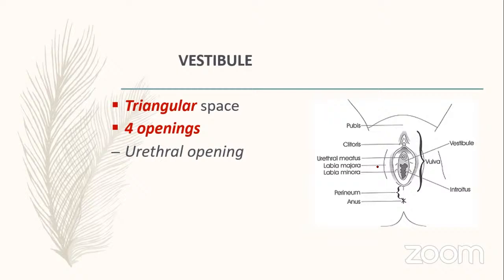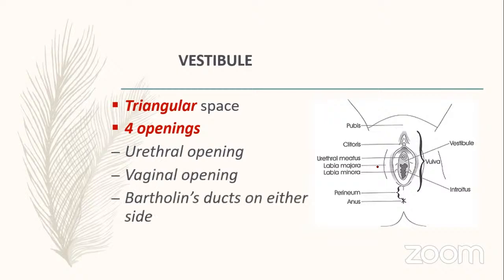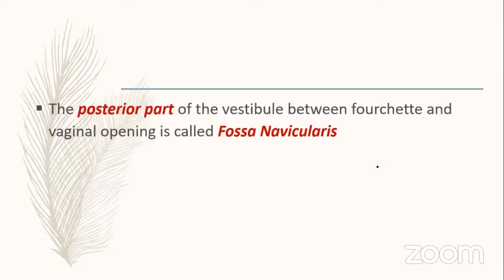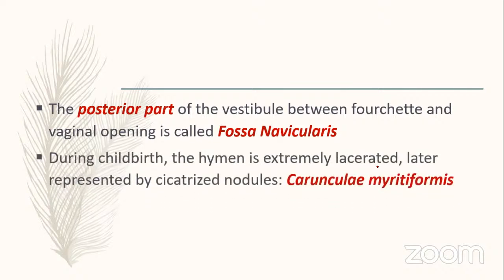The vestibule is a triangular space with four openings: urethral opening, vaginal opening, Bartholin's ducts on either side, and ducts of paraurethral glands of Skene. The posterior part of the vestibule between the fourchette and vaginal opening is called the fossa navicularis. Carunculae myrtiformes are scarred nodules from lacerated hymen after childbirth.